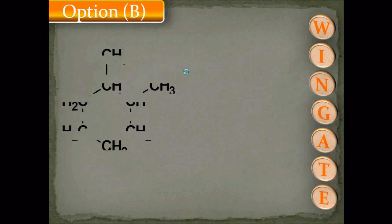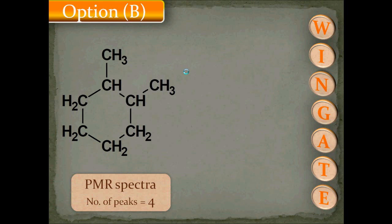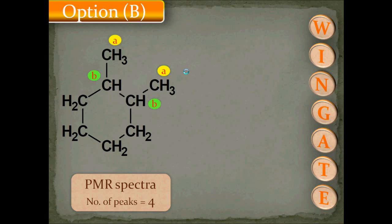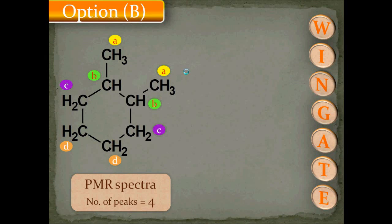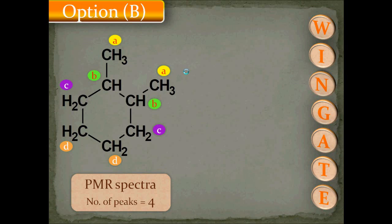Now let us go for option B, which is 1,2-dimethylcyclohexane. The PMR spectra gives 4 PMR signals: protons indicated by A are equivalent (1 signal), protons indicated by B are attached to the side chain (1 signal), protons indicated by C are ortho to the side chain (1 signal), and protons indicated by D are meta to the side chain (1 signal) — total 4 PMR signals.